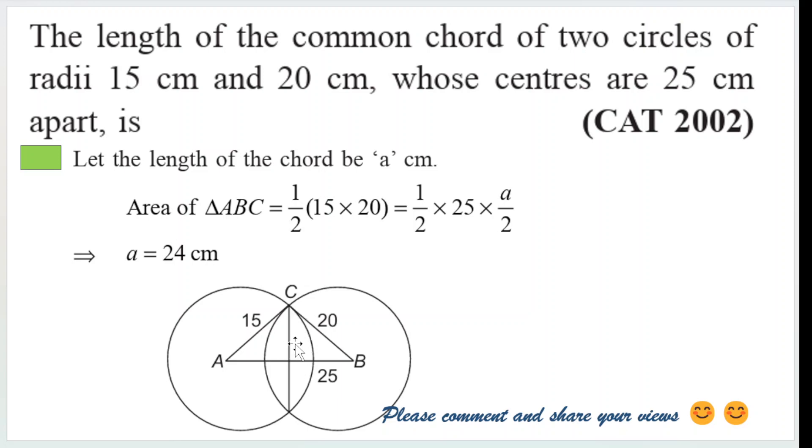let us call it, let us call it A by 2. If the total length of the chord is A, then this part, half of it, will become A by 2.